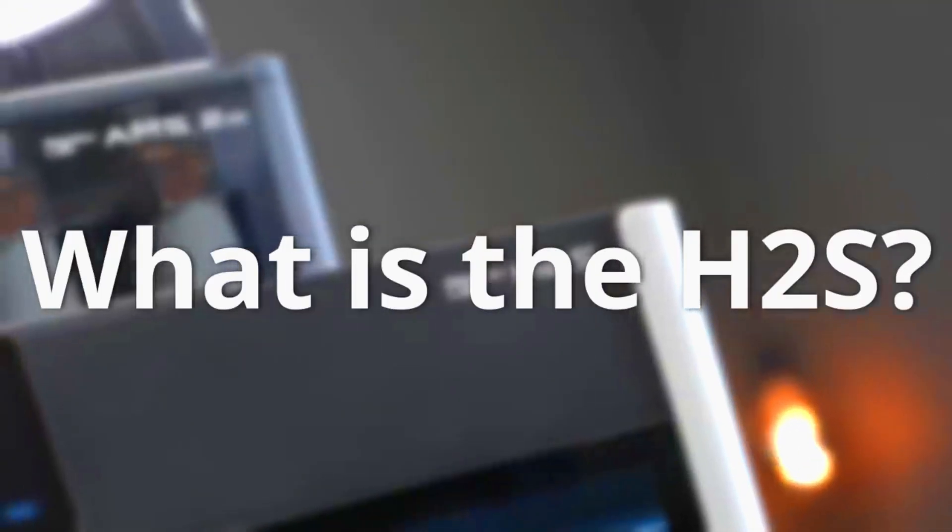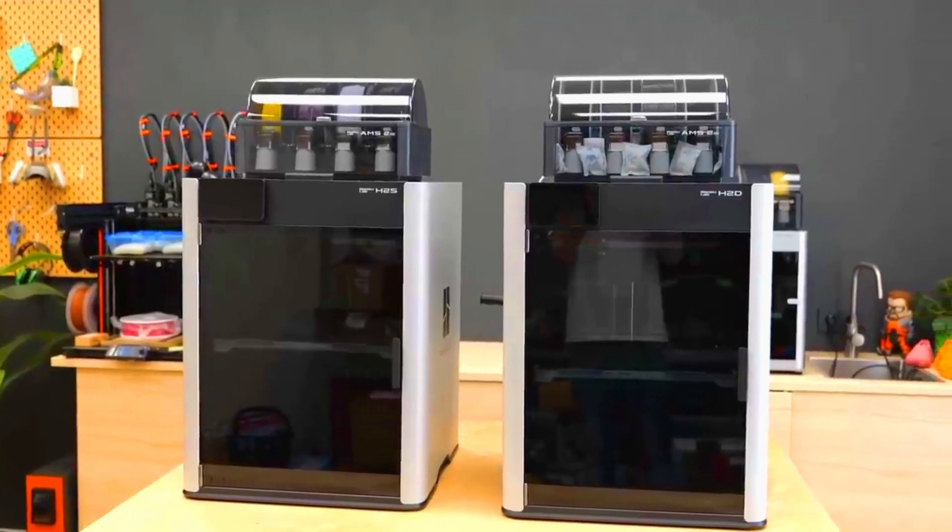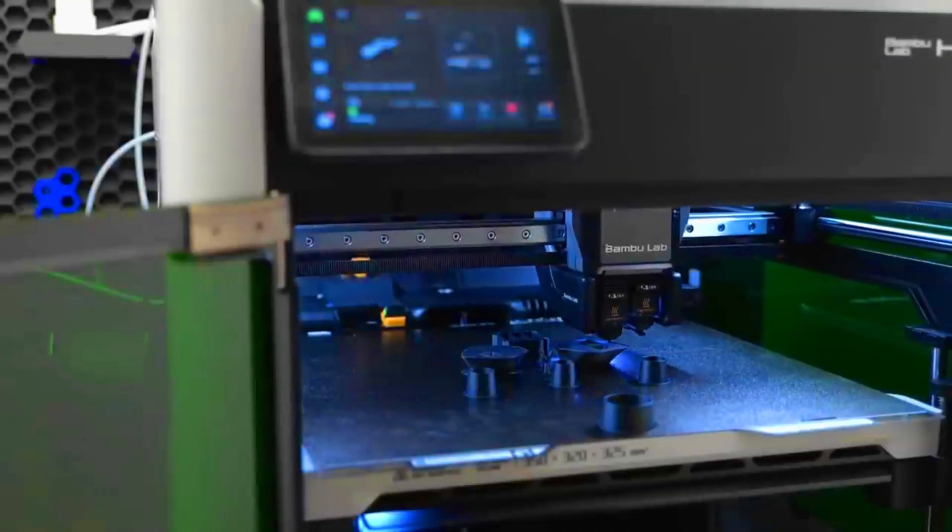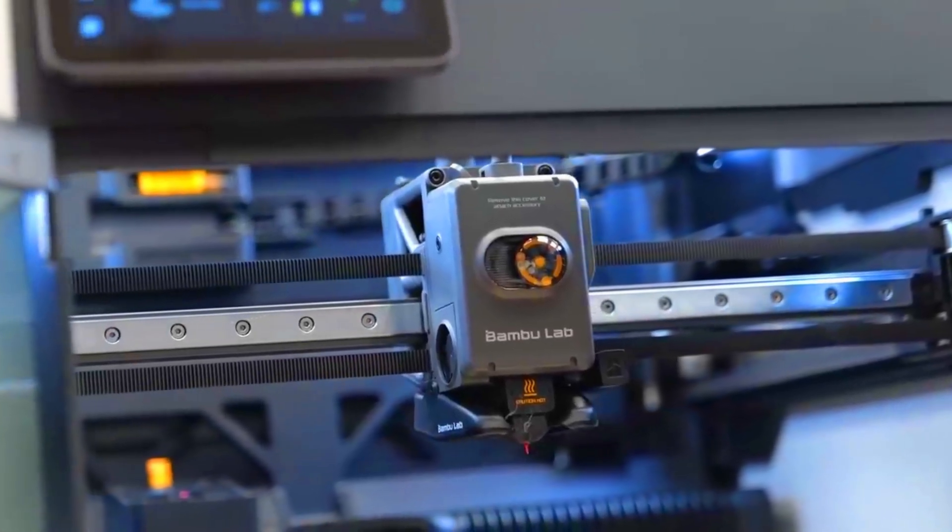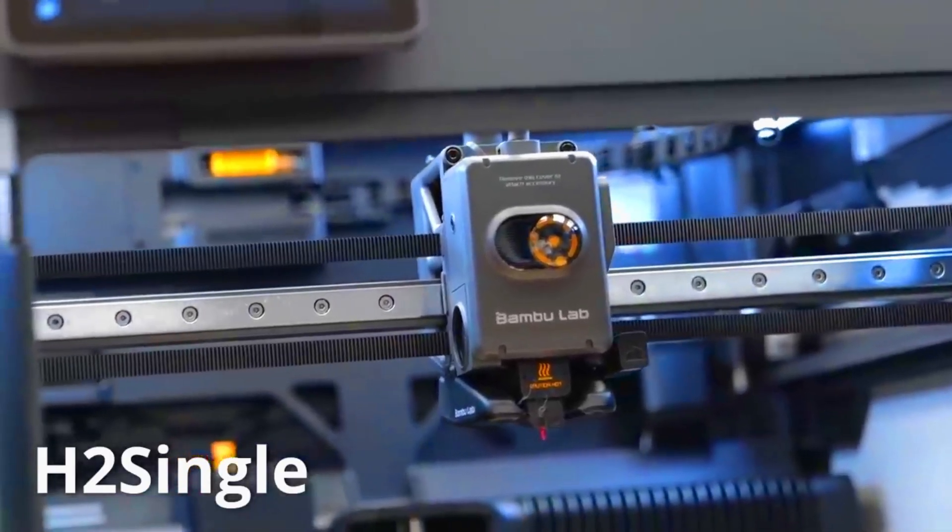What is the H2S? The H2S is essentially the H2D platform with the complex dual nozzle system replaced by a new high performance single nozzle extruder. The S literally stands for single.